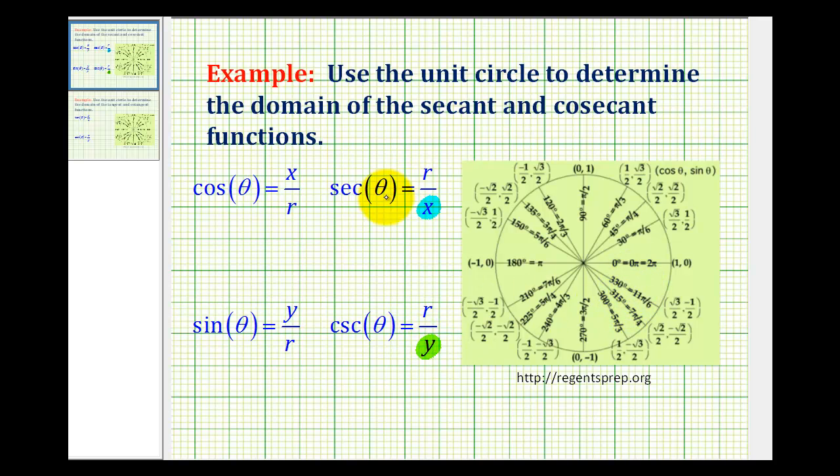So let's start by determining the terminal sides of the angles that must be excluded from the domain of the secant function. So we'll locate where x is equal to zero. Notice how x is equal to zero here and here, which means any angle that has a terminal side along the positive y axis or the negative y axis cannot be in the domain of the secant function.